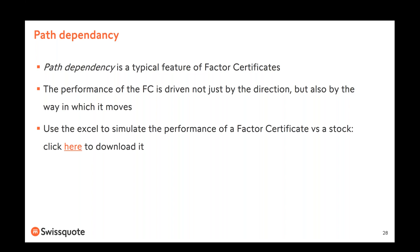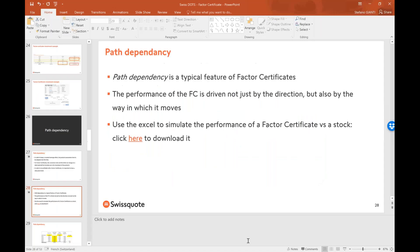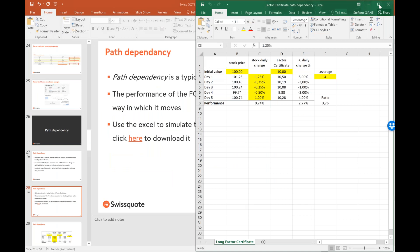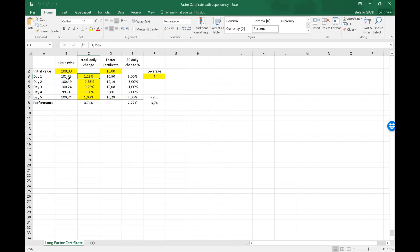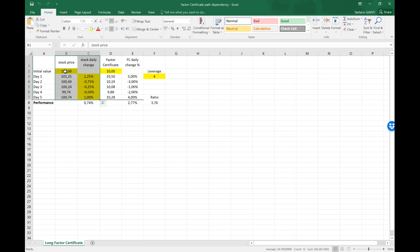The performance of the factor certificate is driven not just by direction, but also by the way in which the underlying security moves. You can use the Excel file to simulate the performance of a factor certificate versus a stock. The file will be in the description of the YouTube video — both the PDF and the Excel file link. In the Excel file, the highlighted yellow cells are what you change: two columns for the stock price and two for the factor certificate.